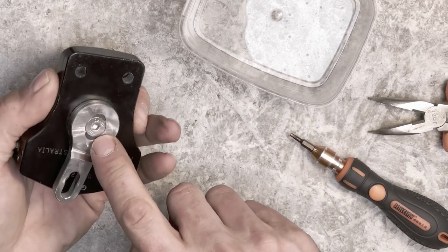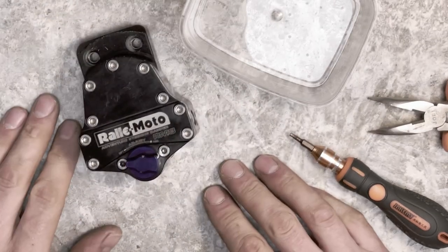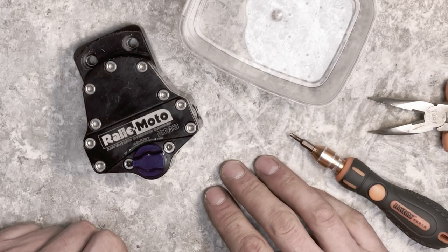This nut gets loose as well, so tighten that one as well. Rally motor steering damper, clean up, fix, done.